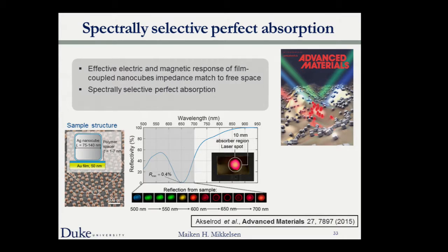If you come in with the right particular wavelength, it is completely absorbed and nothing is reflected. We achieve absorption of about 99.6-99.7%. On a centimeter-scale area, defocusing a tunable laser and observing reflection on a white screen, we see no effect at blue, green, yellow, and orange wavelengths. Once we hit the resonance, it goes completely black in the area with nanocubes, while we still see reflection outside. We can also do this over conformal surfaces — we coated a lens from the lab with gold, polymers, and nanocubes, confirming the same spectrally selective perfect absorption.